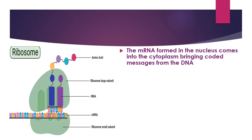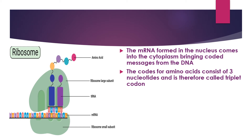Here we see the ribosome with a large unit on top and a smaller unit below, along with the tRNA and the process of amino acid formation. The mRNA formed in the nucleus of the cell comes into the cytoplasm, bringing with it coded messages from the DNA. These codes for amino acids consist of three nucleotides and are therefore called a triplet codon.